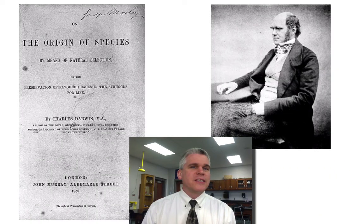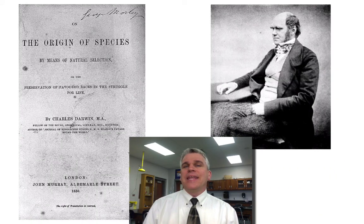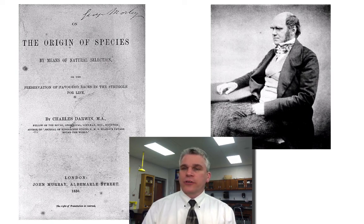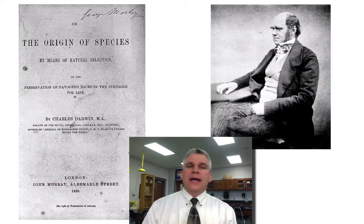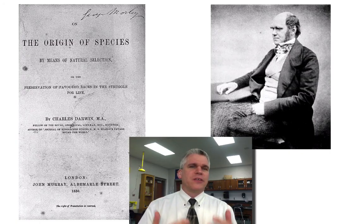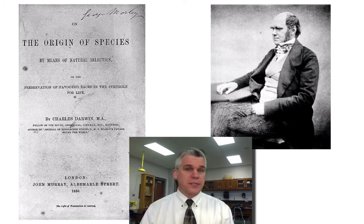Darwin had become convinced that species evolve. But he needed a mechanism — a scientific explanation based on a natural process to explain how and why evolution occurred. When Darwin realized that most organisms don't survive and reproduce, he wondered which ones survive, and why do they survive? And that all led up to his theory of natural selection that he wrote in a book called The Origin of Species. And that's what we're going to take a look at in another video.